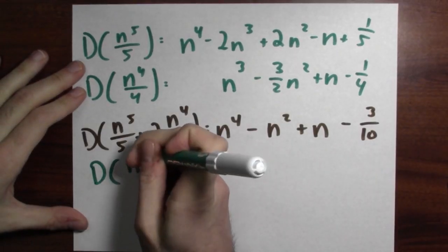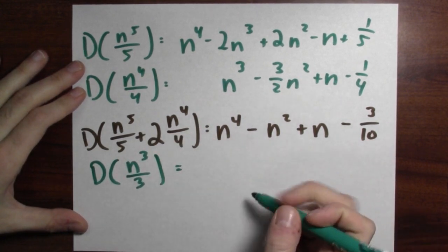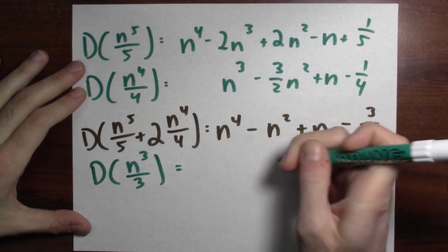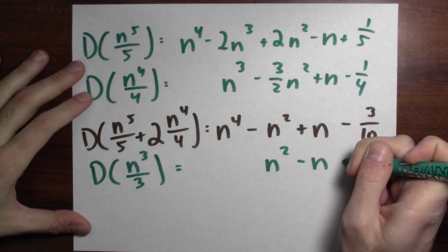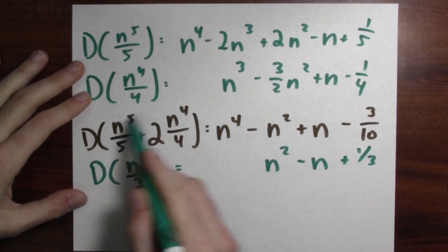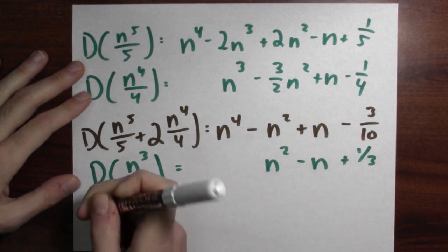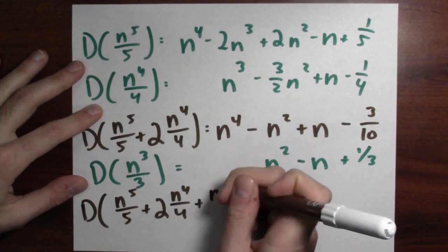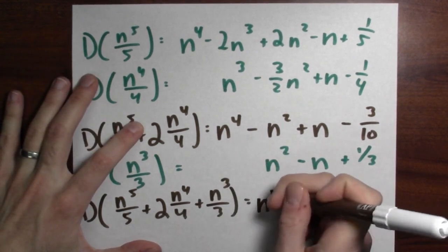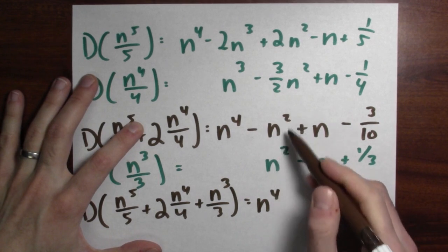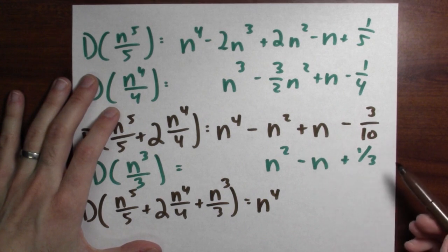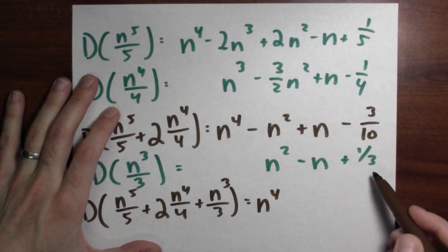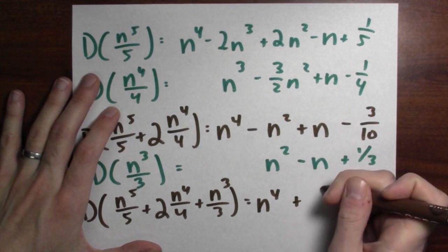I could get rid of that n squared term by adding on the differences of n cubed. If you calculate the differences for the list of numbers n cubed over 3, you get n squared minus n plus one third. So taking the previous combination and adding n cubed over 3 eliminates the n squared term. I'm looking at differences of n to the fifth over 5 plus 2 copies of n to the fourth over 4 plus n cubed over 3, and I'm left with n to the fourth. The plus n minus n cancels too, and minus three tenths plus one third gives plus one thirtieth.